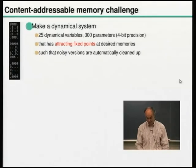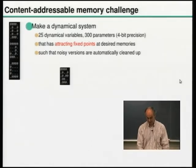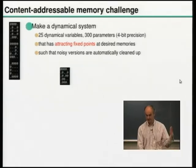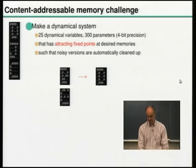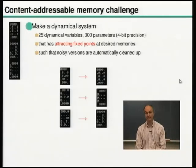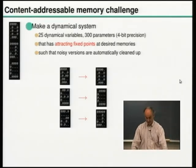That in itself would be an exciting thing to solve, and it would look like this: if you flip say three bits of a D, the dynamics of the dynamical system should take you back to a clean D. A noisy C should be turned into a C, and a noisy J should be turned into a J. That's the goal of the problem.